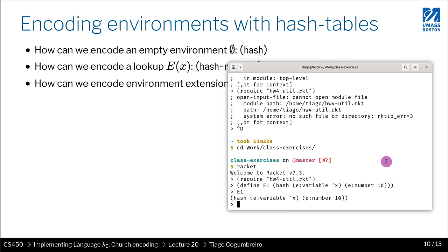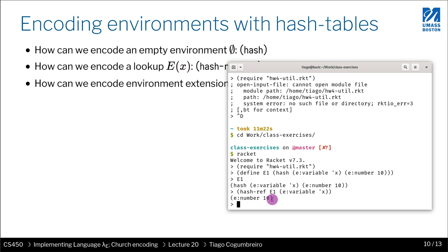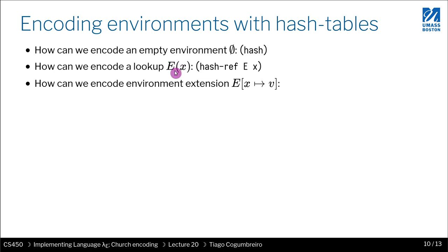So now I want to look up a certain variable, variable x. So how do I do that? I do hash-ref. So now I'm trying to represent this expression, E of x. So I would do e1, e variable x. And what I see is I obtain number 10, as expected. So whenever you see this in the slides, that means looking up in the hash table.